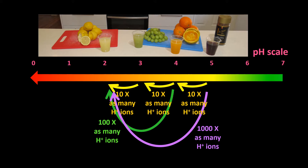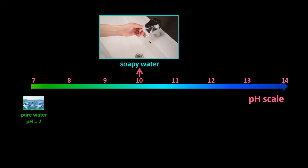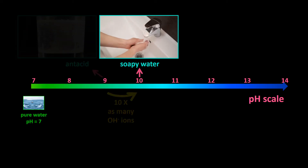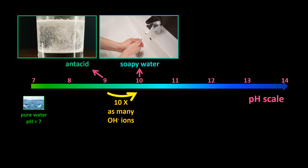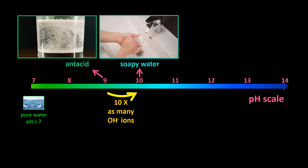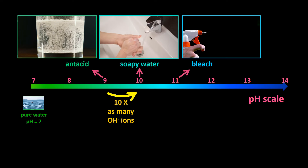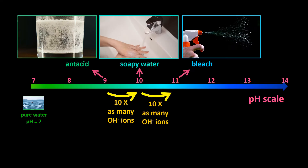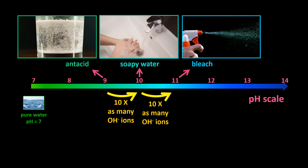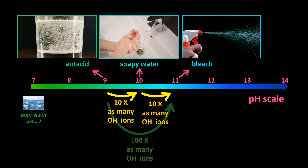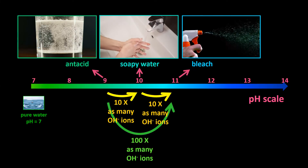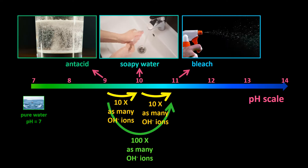That's how the pH scale works. It's the same on the base side of the scale. Soapy water with a pH of 10 has 10 times the concentration of OH- ions as an antacid mixture of pH 9, and bleach with a pH of 11 has 10 times the concentration of OH- ions as soapy water. So bleach has 100 times as many OH- ions as an equal amount of antacid mixture.